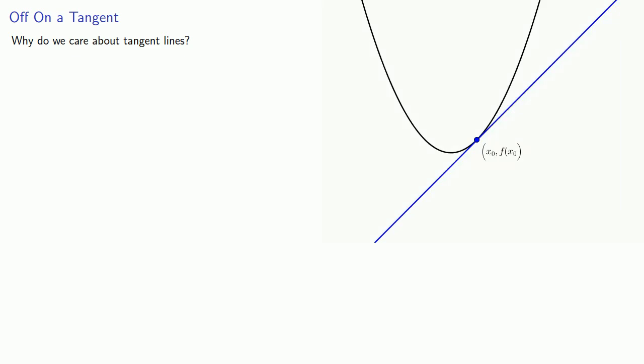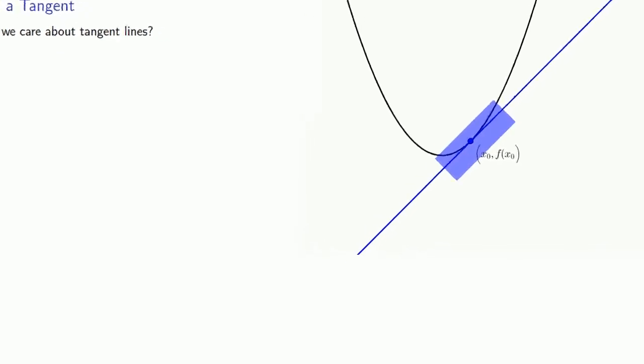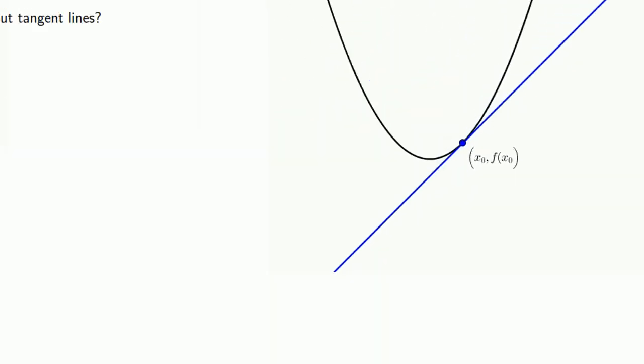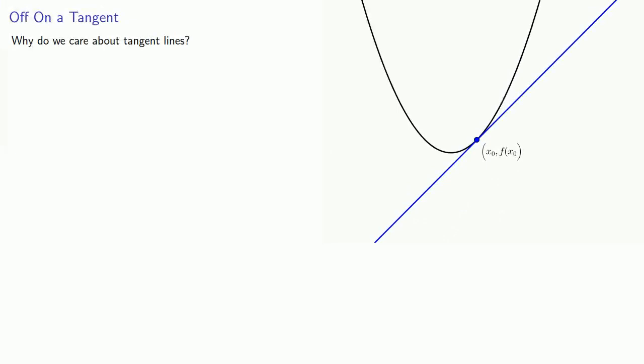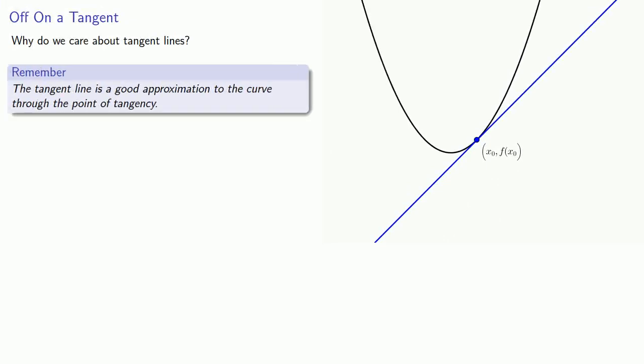So why do we care about tangent lines? Geometrically, if we look at the curve and a line tangent to the curve at a given point, the tangent line is going to very closely match the curve itself. So if we zoom in on the curve, we see that if we're not too far from the point of tangency, the tangent line will be a very good match to the curve. And this leads to the following idea: the tangent line is a good approximation to the curve through the point of tangency. That's a geometric idea; algebraically, it corresponds to the following useful idea.